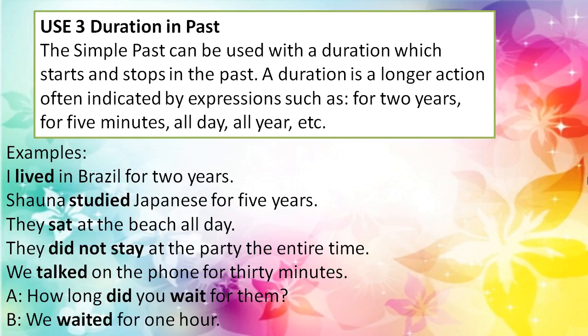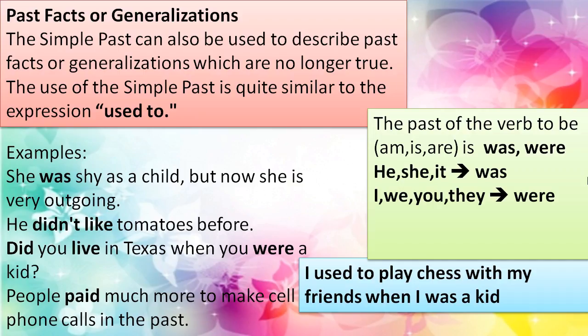We use duration in the past. The simple past can be used with a duration — a longer action often indicated by expressions such as for two years, for five minutes, all day, all year, etc. I lived in Brazil for two years. Shawana studied Japanese for five years. They sat at the beach all day. They did not stay at the party the entire time. We talked on the phone for 30 minutes. How long did you wait for them? We waited for one hour — specific time.